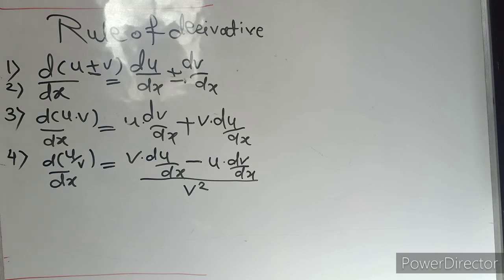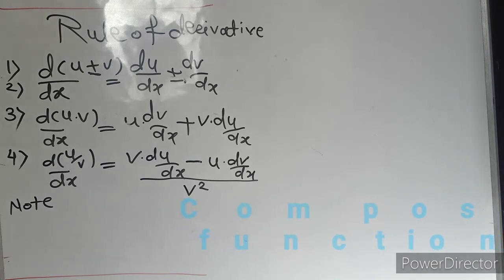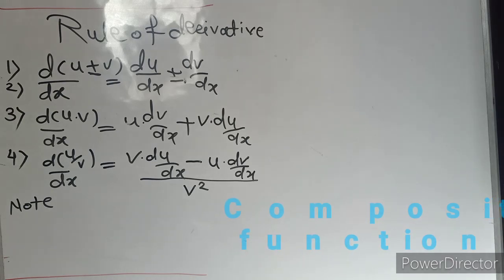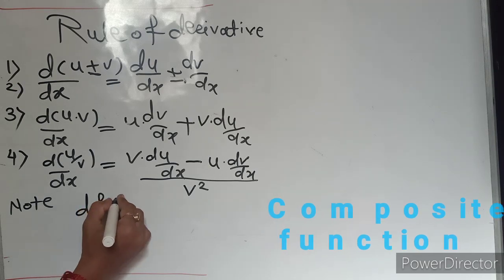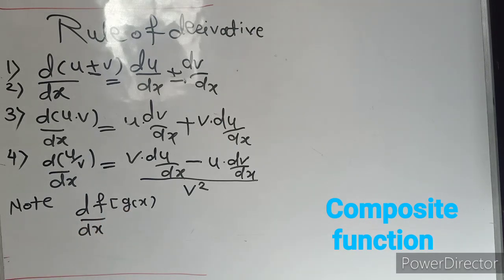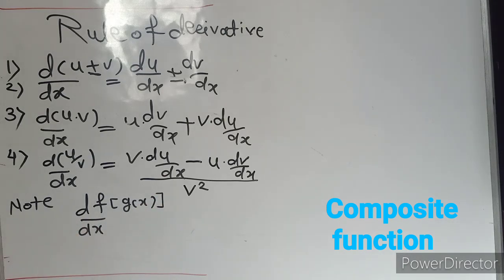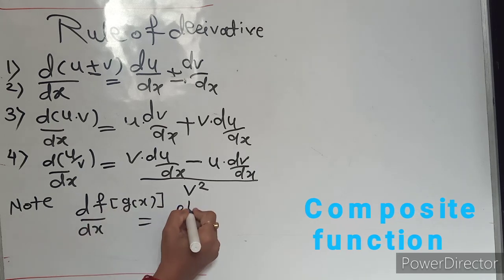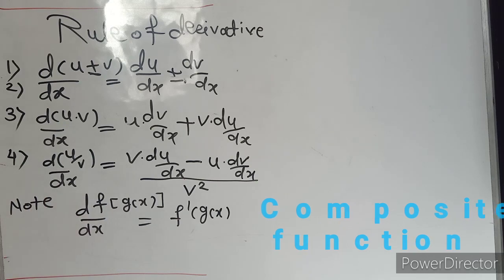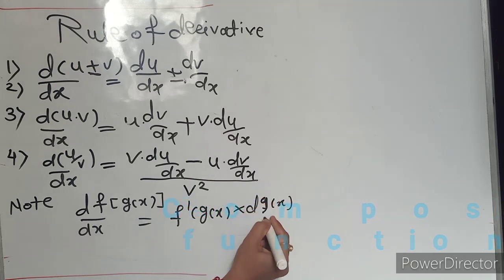One more rule you must remember to solve examples of derivative. Agar hume composite function diya hua hai — composite function means function of a function — means if you want to find the derivative of f of g of x, then we must find the derivative of f(x) first, and then the derivative of g(x). So write f dash of g(x), and then multiply by the derivative of g(x) with respect to x.